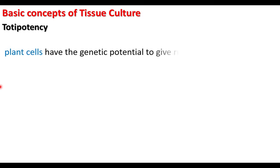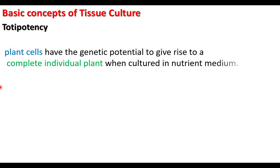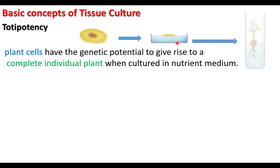Now let us see the basic concepts of tissue culture. Plant cells have properties that form the basis of plant tissue culture. The first one is totipotency. Toti means total; potency means capacity. Plant cells have the genetic potential to give rise to a complete individual plant when cultured in a nutrient medium. This property of individual plant cells to develop into the entire plant is called totipotency.